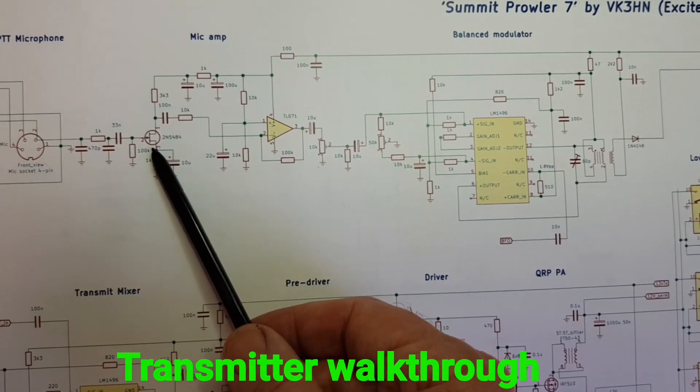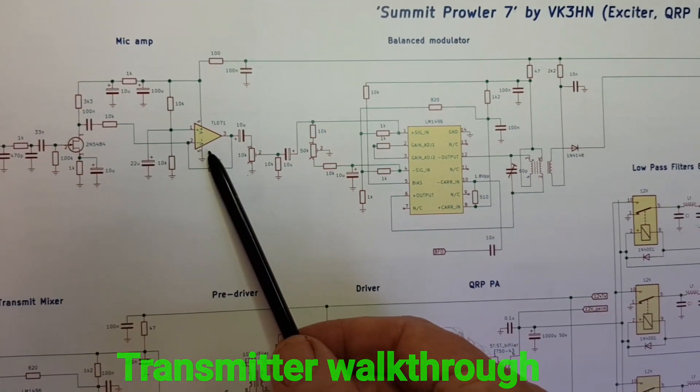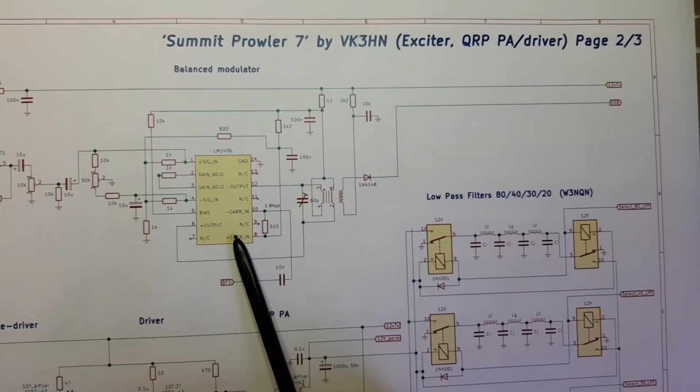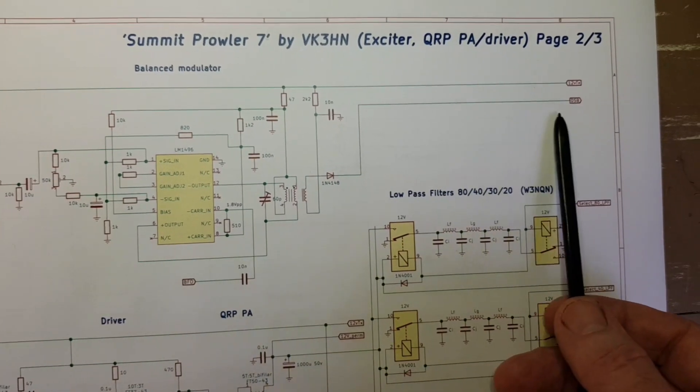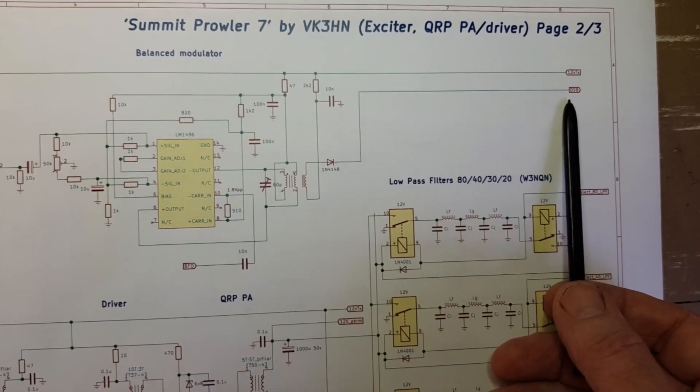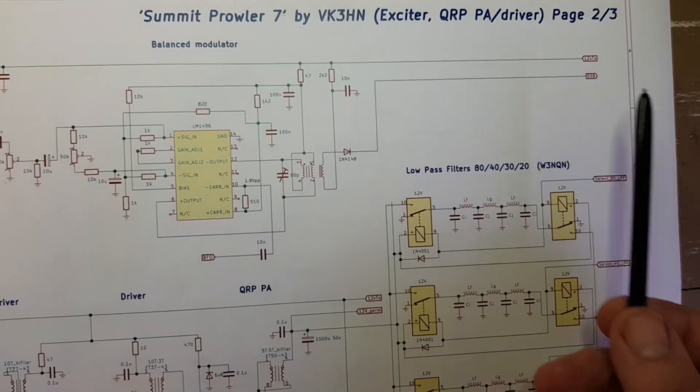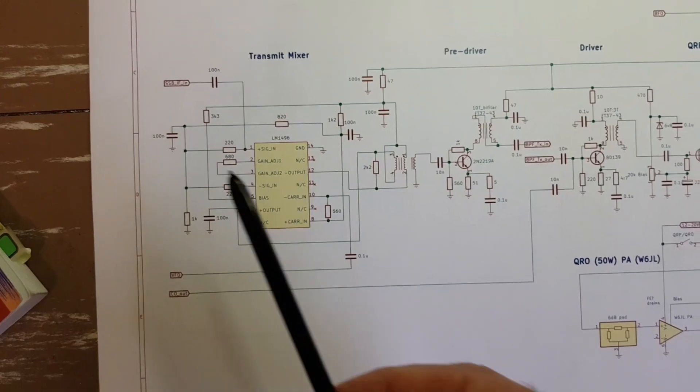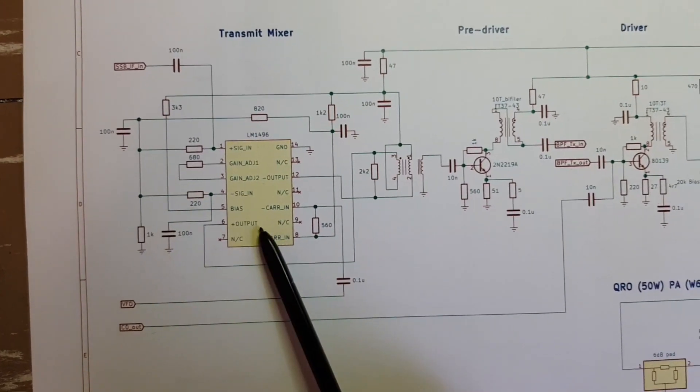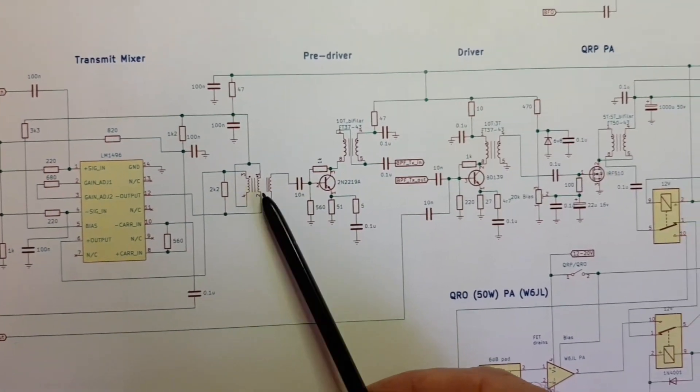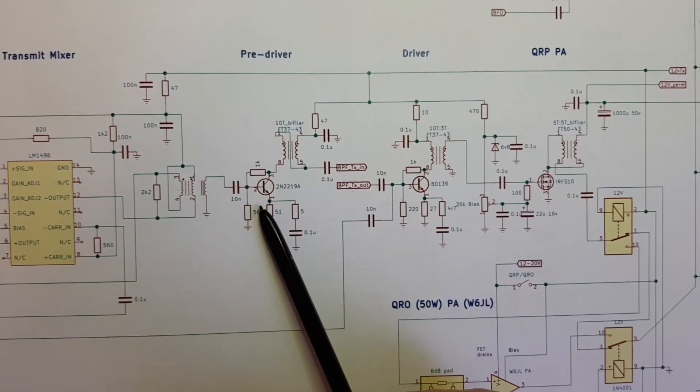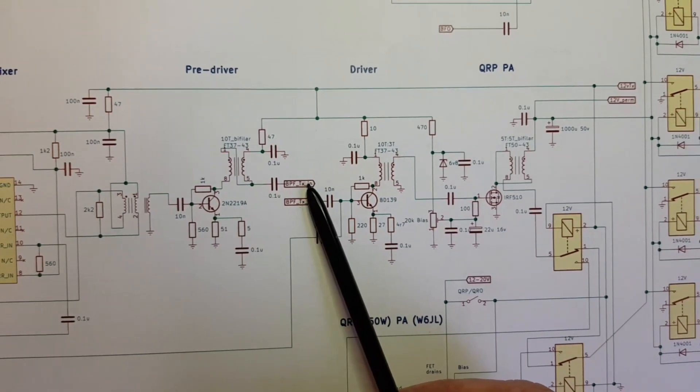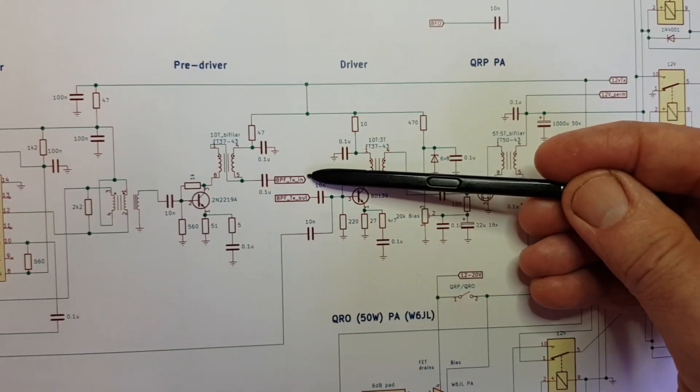So a FET mic amp followed by an op amp for some audio gain, 1496 balanced modulator. The broad banded double sideband goes off to the IF strip, so one stage of MOSFET amplification through the filter, second stage of MOSFET amplification, then returns to the transmit mixer, another 1496. The broad banded mix of output signals is amplified and then sent off to one of those relay switched bandpass filters.